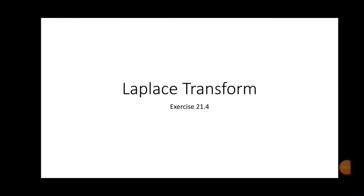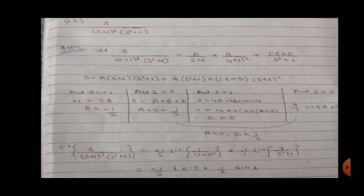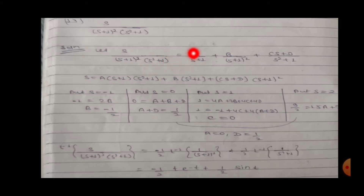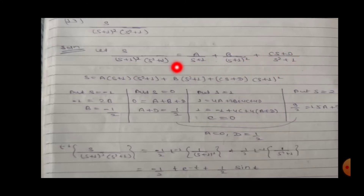Laplace transform exercise 21.4, question number 13: s by (s²+1)² whole square by s²+1. We apply partial fractions: A/(s+1) plus B/(s+1)² plus (Cs+D)/(s²+1), because the denominator has a quadratic factor.